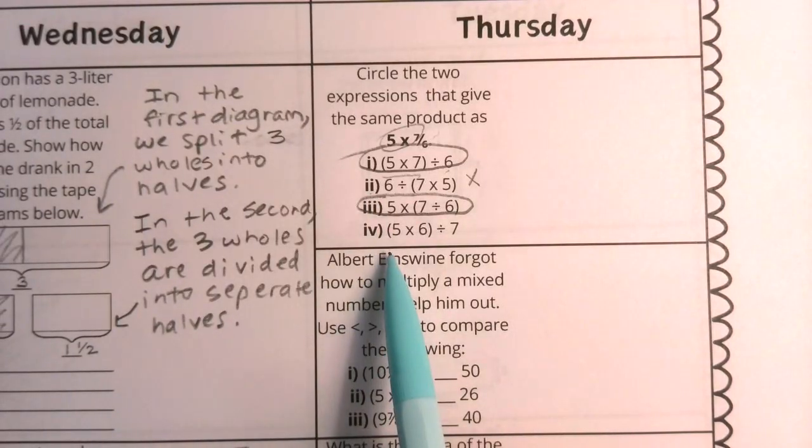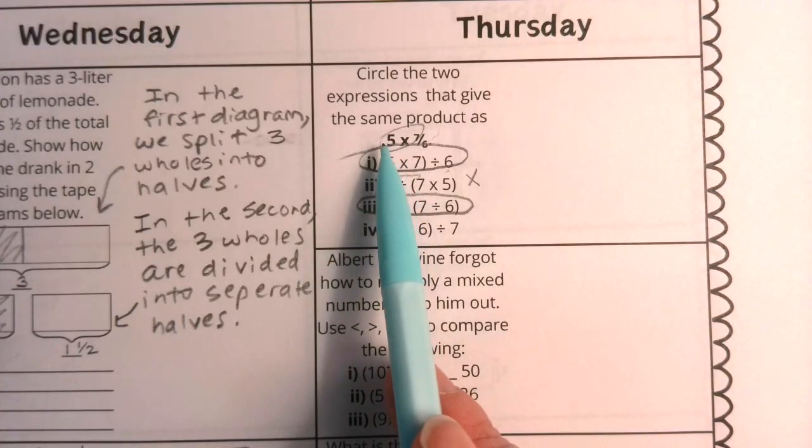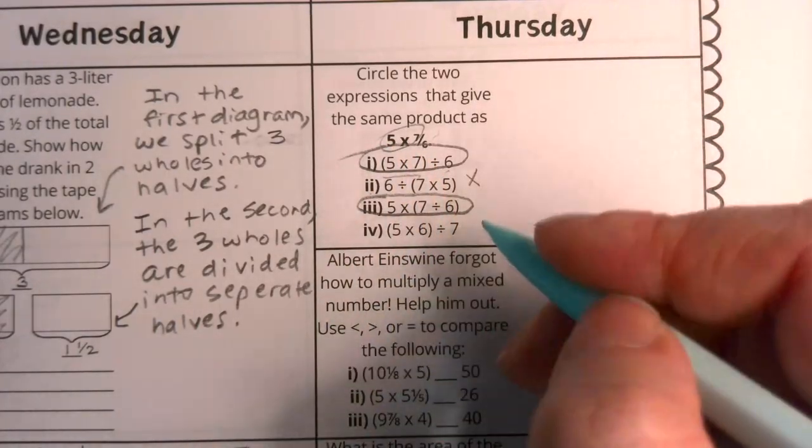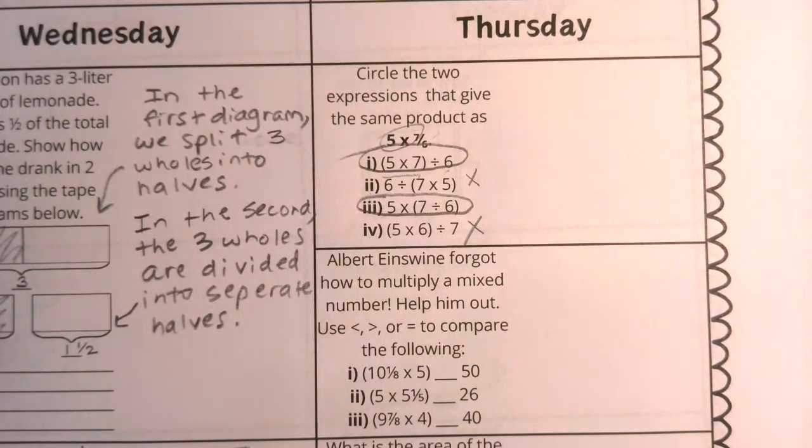The fourth one, we should not circle. This is not true. We are not going to take our five times our denominator. This is not true.